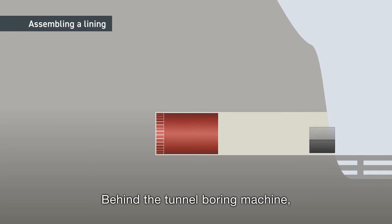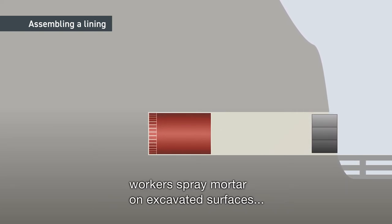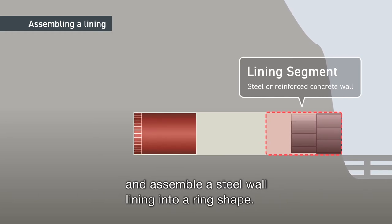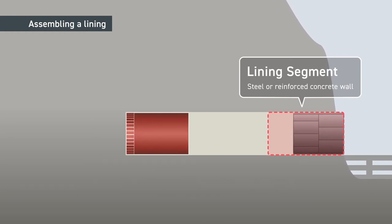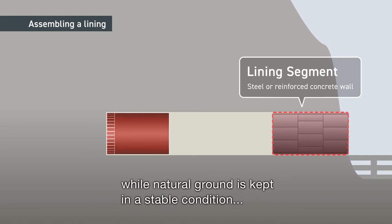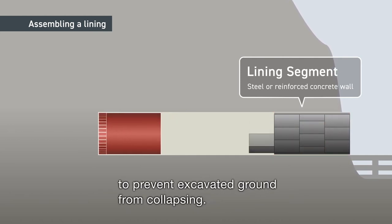Behind the tunnel boring machine, workers spray mortar on excavated surfaces and assemble a steel wall lining into a ring shape. This way, safe tunnel construction is possible, while natural ground is kept in a stable condition to prevent excavated ground from collapsing.